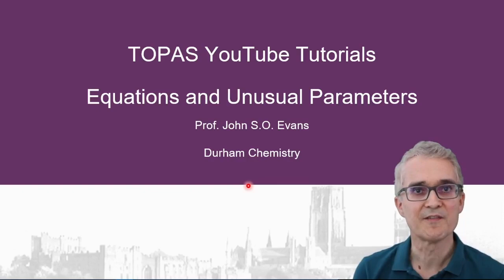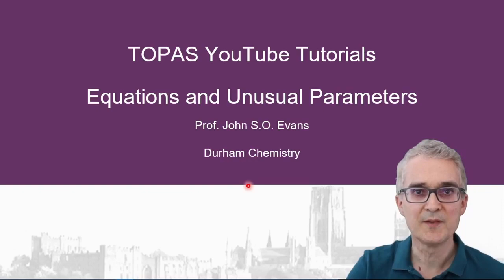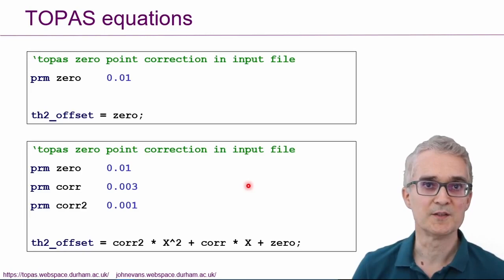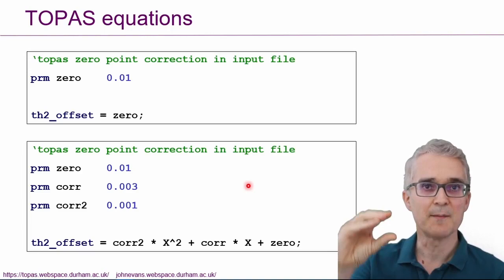Or perhaps even to refine some rather unusual parameters from powder diffraction data. So I want to pick up from the yttrium oxide example that we looked at in one of the earlier videos. You might remember from that video that one of the parameters we were refining was a zero-point correction for the diffractometer to describe the offset between the true 2θ value of the diffractometer and the setpoint of the detector.